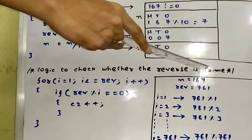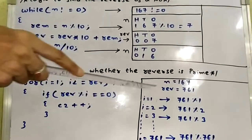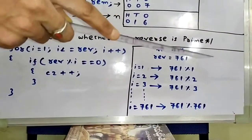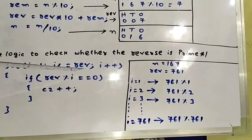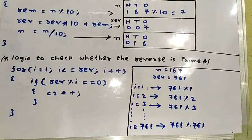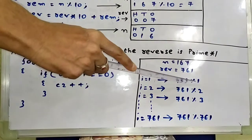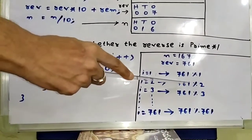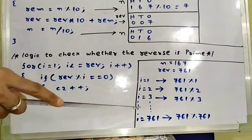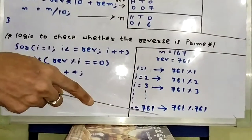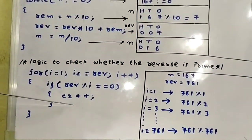This is the logic to check whether the reverse is prime or not. A for loop runs from 1 to rev — in our example, the reverse of 167 is 761, so the loop runs from 1 to 761. If rev modulo i equals 0, then c2 is incremented. For example: when i = 1, 761 % 1; i = 2, 761 % 2; i = 3, 761 % 3 — and so on until i = 761, where 761 % 761 = 0. If modulo returns 0, c2 is incremented.